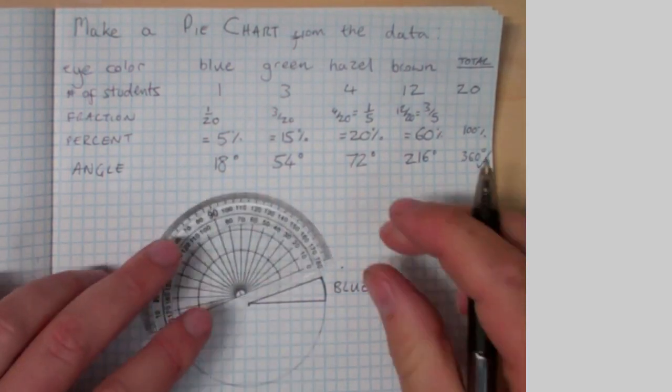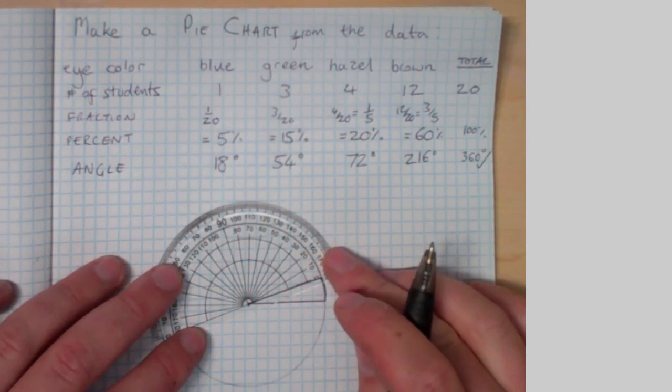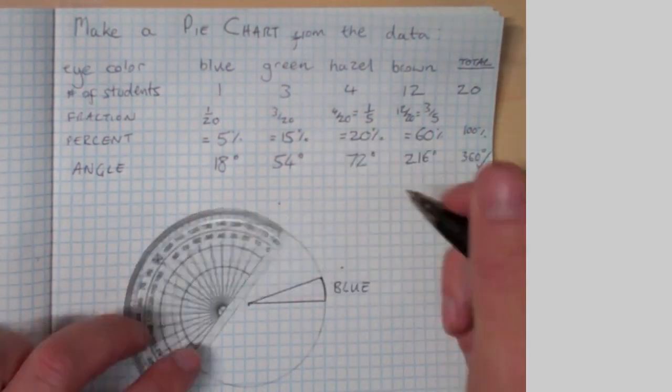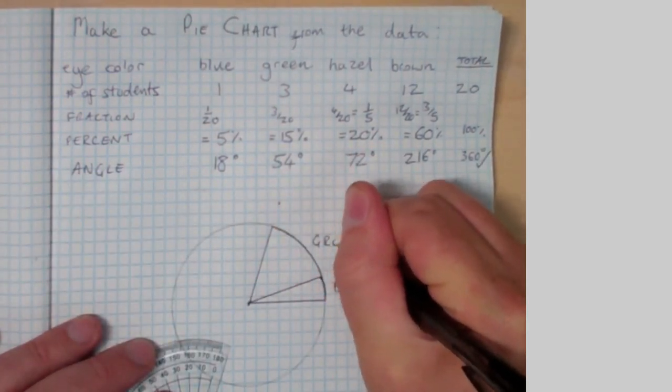I repeat the same for green with 54 degrees. Center the protractor, put a dot at 54 degrees and make my pie section for green.